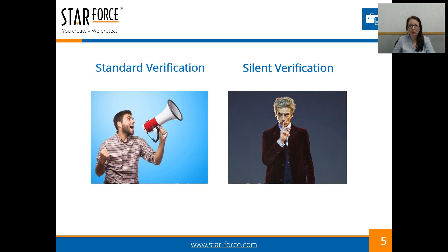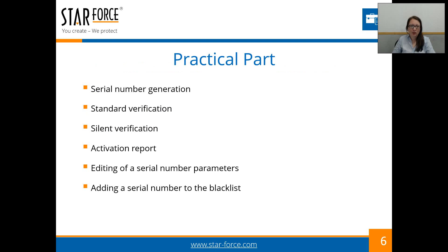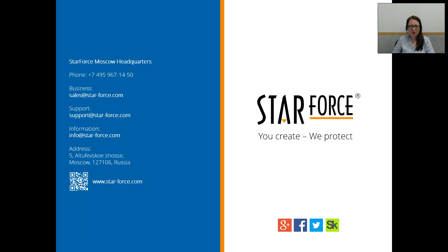We have two types of verification: standard and silent. By default, standard verification is switched on. If you need silent verification, please contact our support team — they can switch it on for a project or for different protections. Now we are going to move to our practical part. We will generate a serial number, look at standard and silent verifications, look at an activation report, and then edit our serial number and add it to the blacklist.